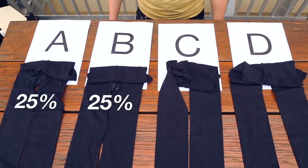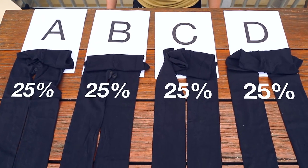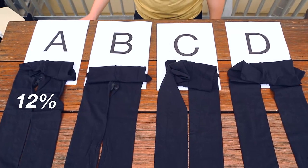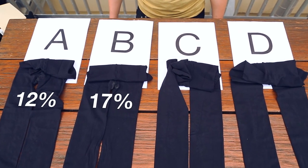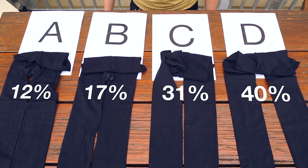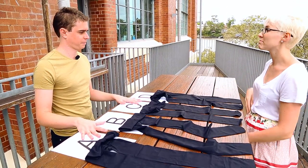So they shouldn't have been any more likely to pick one over the other. With four pairs, if they were selecting at random, they should select A 25% of the time, B 25% of the time, and so on for each of the four pairs. But what actually happened was people picked pair A 12% of the time, pair B 17% of the time, pair C 31% of the time, and pair D 40% of the time. So they had a massive bias — they were far more likely to pick pairs of stockings that were on the right side compared to the left.